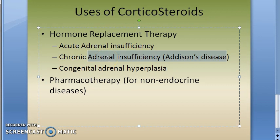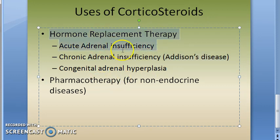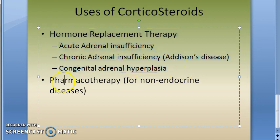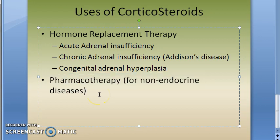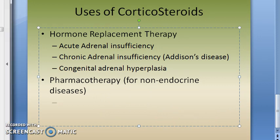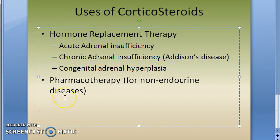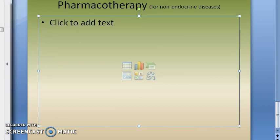So we will use hormone replacement therapy when there is adrenal insufficiency. For pharmacotherapy — use in non-endocrine diseases — we look at the details. There are 16 indications, so those will be covered in the next slide.